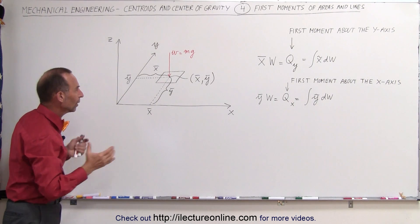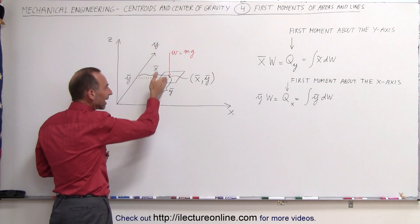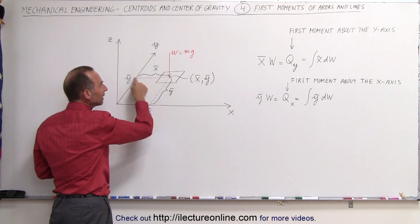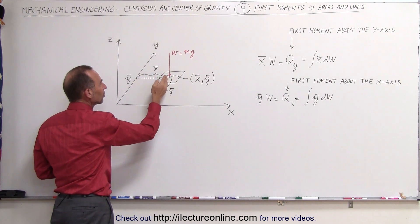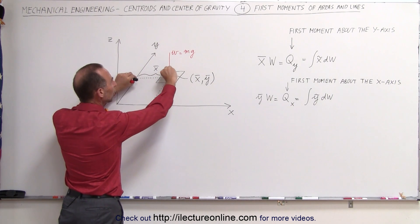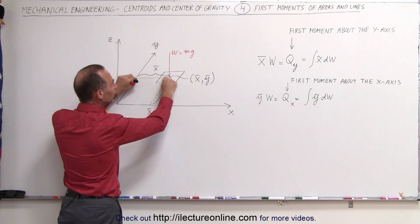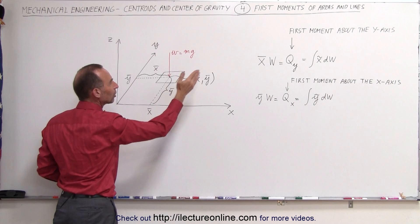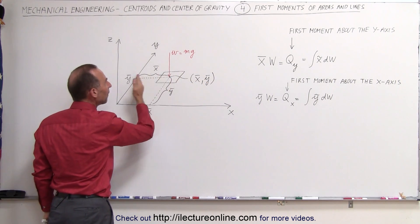Now why does that make sense? Well, notice that the weight is acting in this direction, and if we take this distance right here, this would be the distance relative to the y-axis, and you can see that that creates a moment. A weight times the perpendicular distance equals a moment. So they call that the first moment about the y-axis.